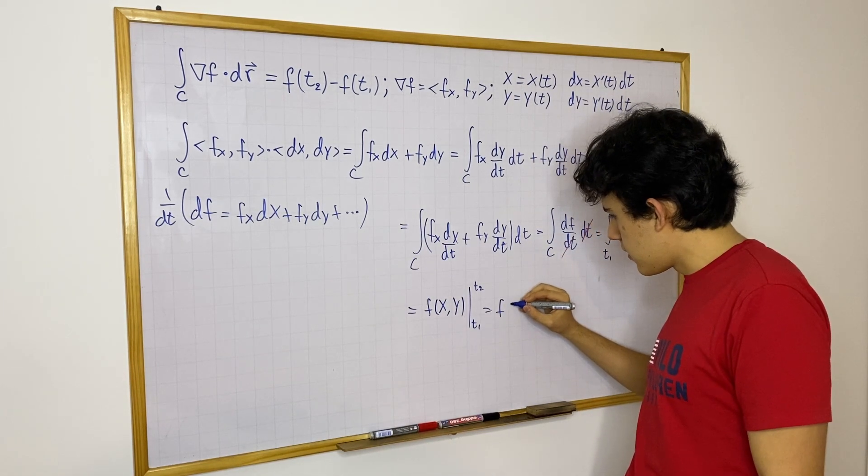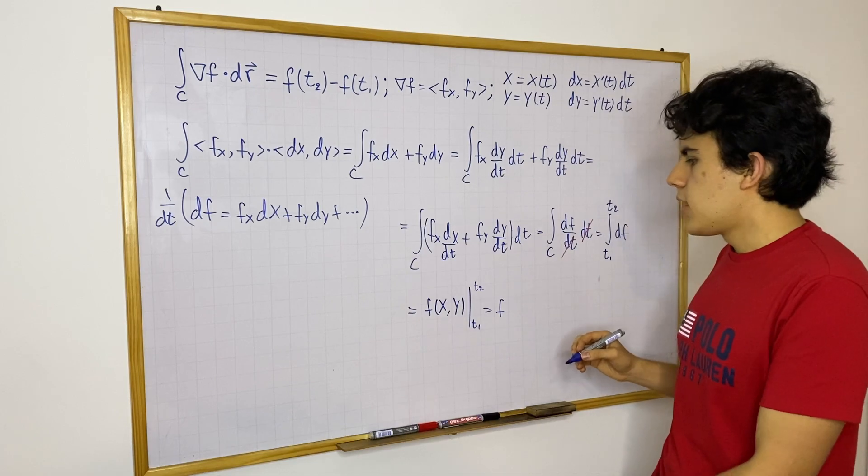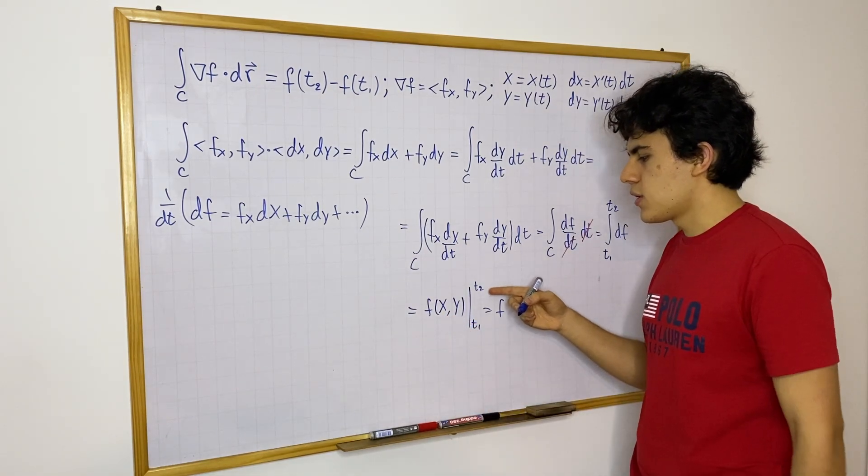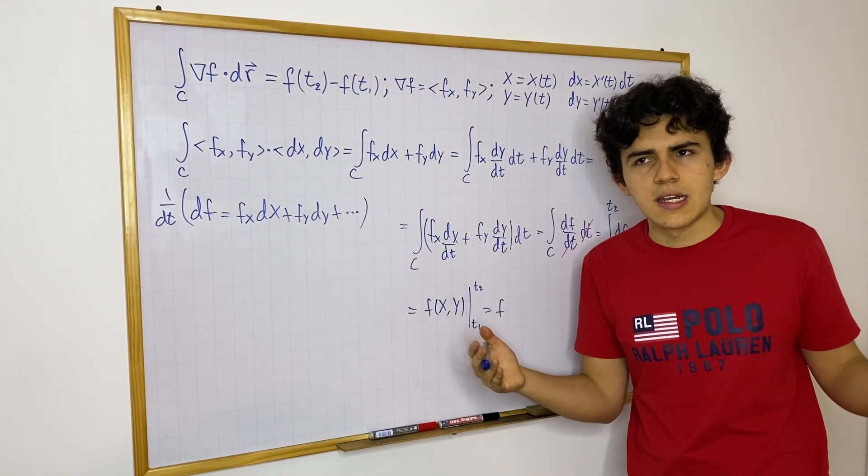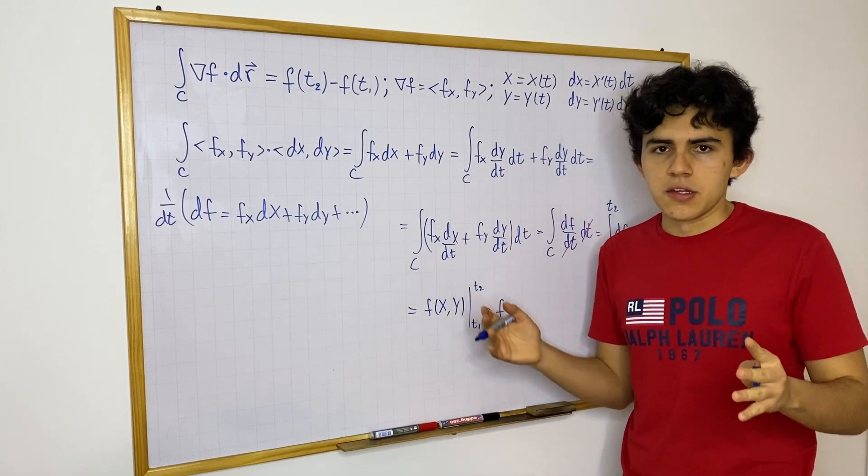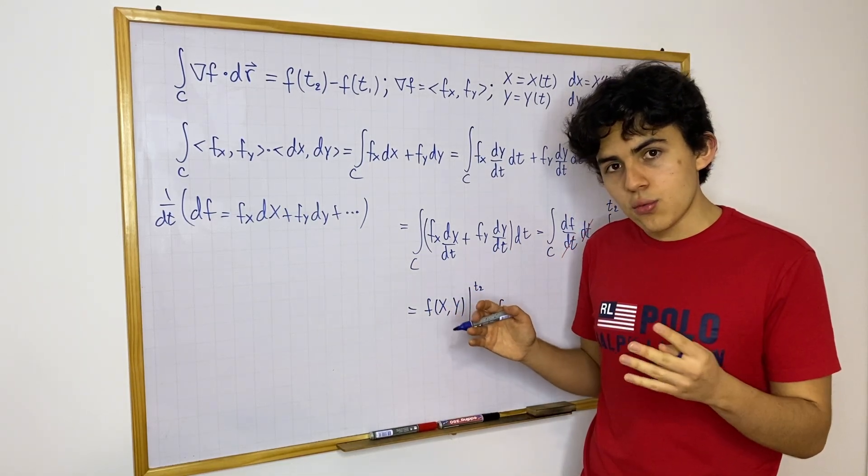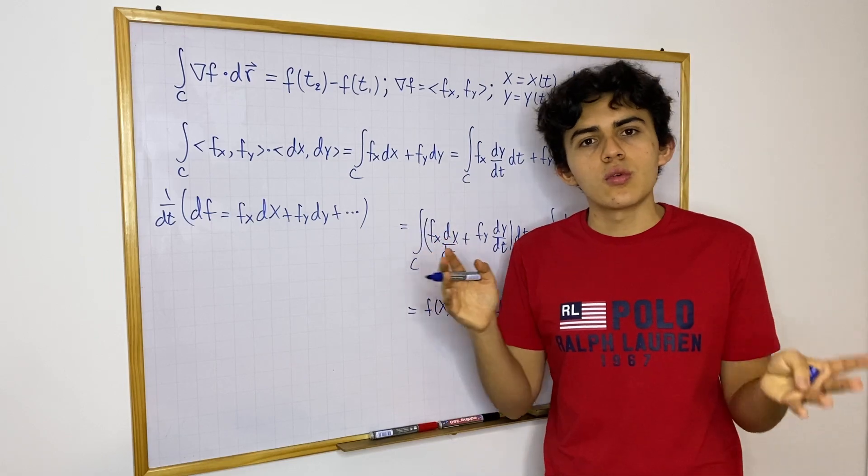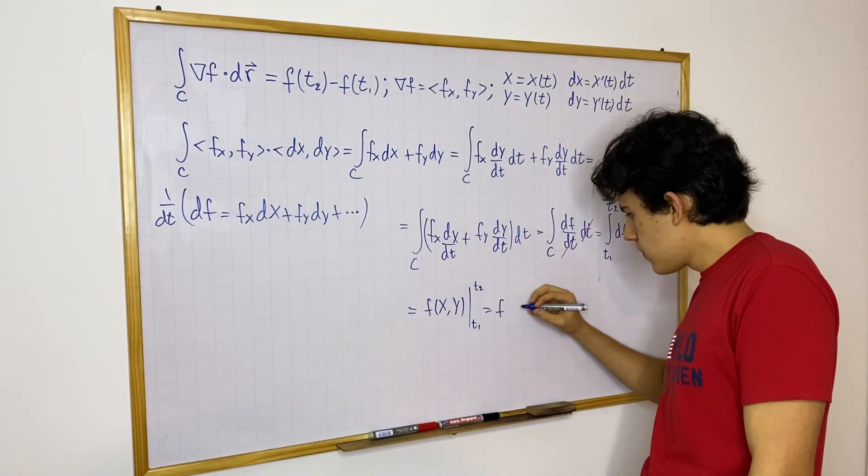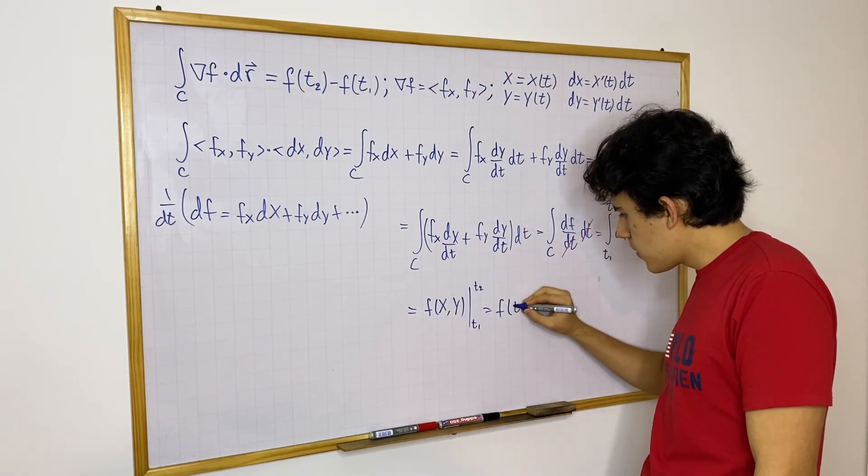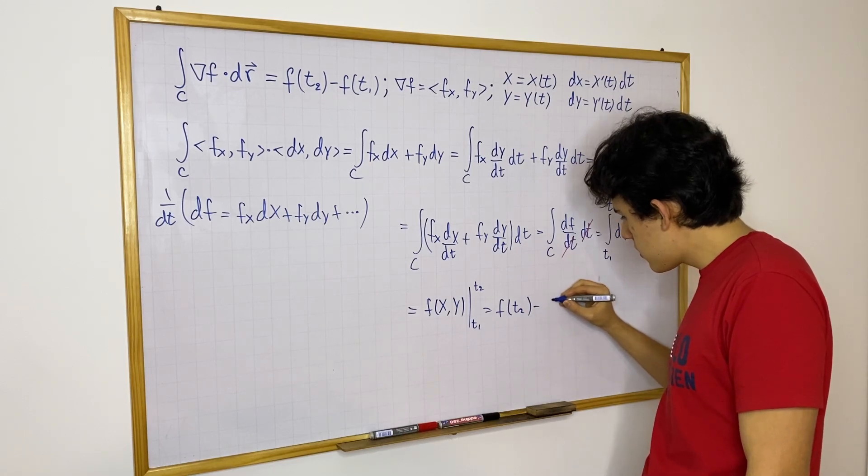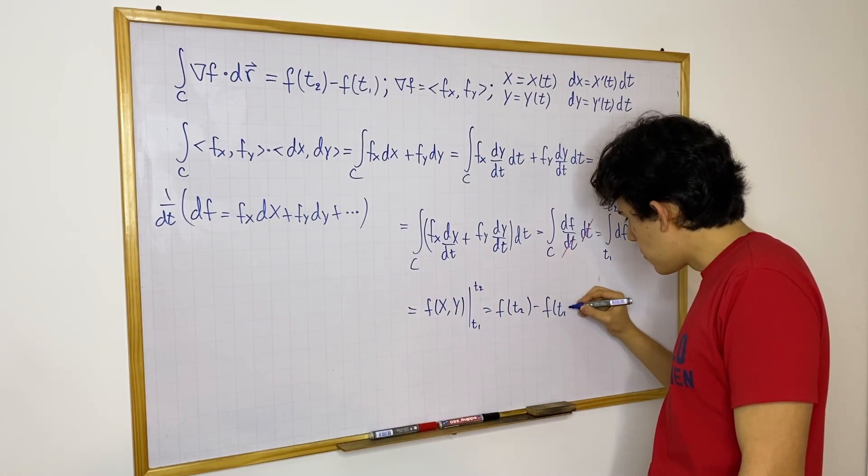And then it simply follows that this is equal to, here really, you have a multi-variable function, and t2 and t1, you could think of it as times, but really think of them as points. t2 and t1, they just represent, in this case, they would represent sort of tuples or coordinates. So then this would just be f evaluated at t2 minus f evaluated at t1.